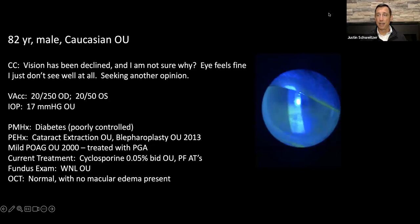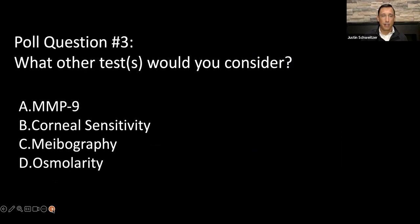There's the slit lamp exam — corneal staining — and that was present in both eyes. So the question to you is: what other tests would you consider in a patient like this? Would you do inflammatory testing such as MMP-9? Would you consider corneal sensitivity testing? Would you do meibography to look at the glands, or osmolarity testing to see if there's an imbalance in his tear film?